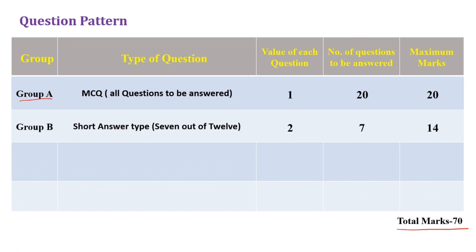Next is Group B, which is short type questions. Each question carries 2 marks. There are 12 total questions and you have to answer 7 out of 12. So 7 into 2 equals 14 marks. Group B carries 14 marks.